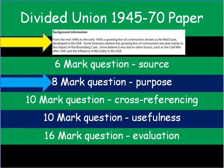Welcome to this, the second part of the divided union walkthrough, where I'll be talking you through an 8-mark question which is all about the purpose of a source. We've looked through the background information. This particular paper is about the Red Scare — it could be about anything — but you'll get this source booklet of sources which you then have to analyse. How do we analyse a source in order to get 8 marks out of 8 on that question? Let's have a look.